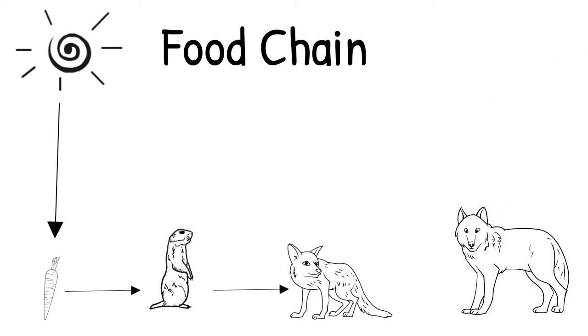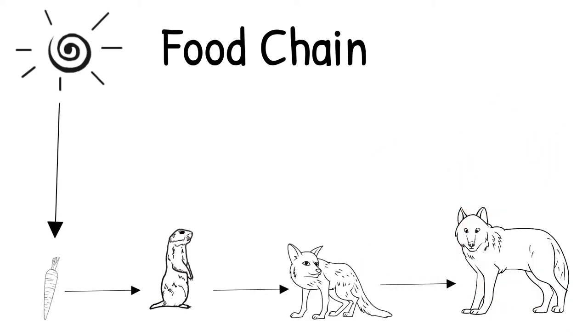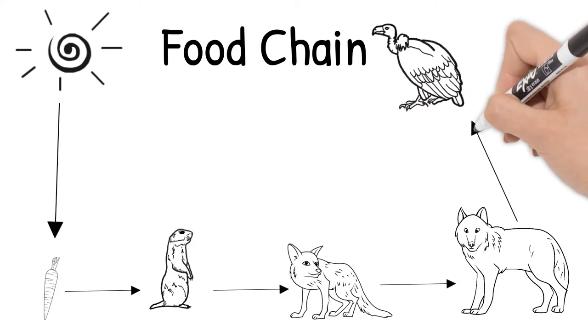The fox is then eaten by a wolf, which is a carnivore, and that arrow will follow the energy going from the fox to the wolf. When the wolf dies, a scavenger such as a vulture will eat the meat. Here is our final food chain.